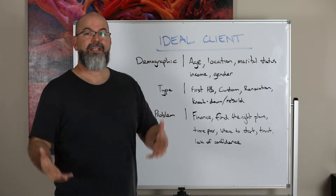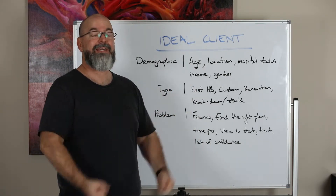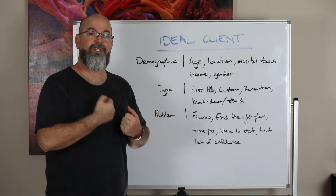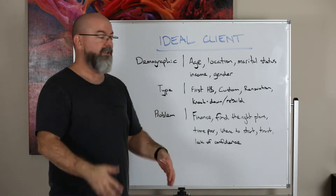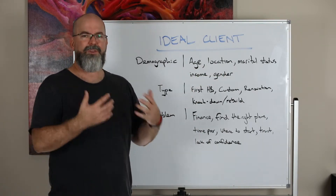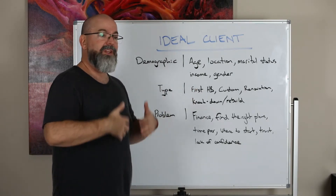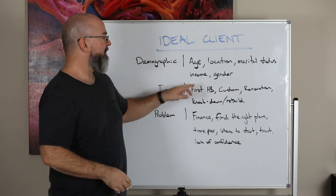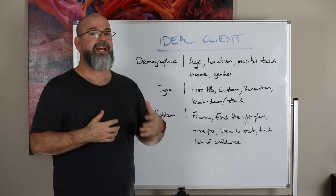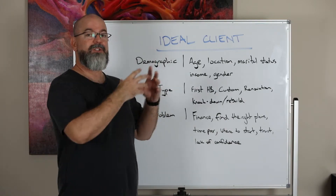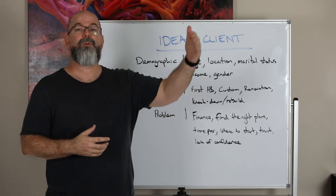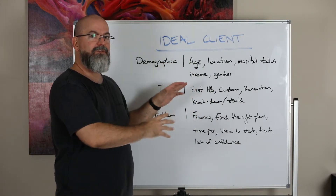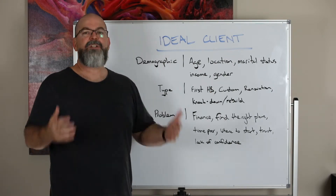Think about whether these people are married or single. If you're targeting first home buyers, is it a single individual or young couples going in to build their first home? Think about their income and what their earnings are like — that will play out to what kind of car they drive. If they're in the top income range, they might be driving Mercedes, BMW, Audis, those sorts of brands. You can then target people who have those interests, knowing they're the potential fit for your building company.